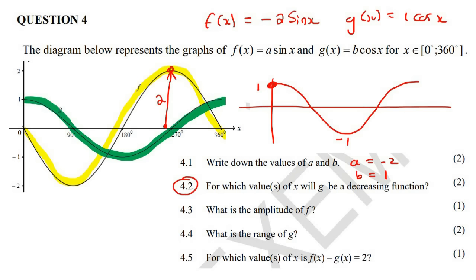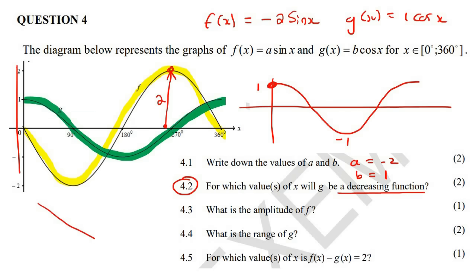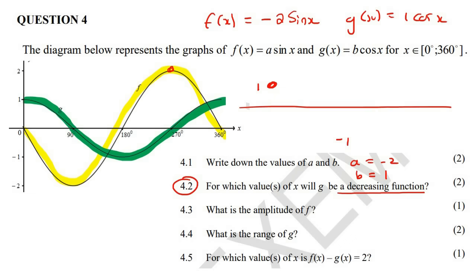The next question says for which values of x will g — the green graph — be a decreasing function? A decreasing function is when you move from left to right and the graph is going down. Wherever it's going up, that's an increasing function. You must go from left to right. So starting here and moving in this direction, where is the graph going down? It's going down from here up to there, then after that it starts going up. So where is it going down? It's between this point and this point, but they want the x values.